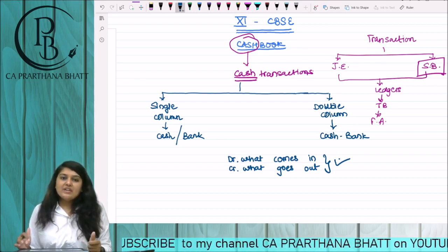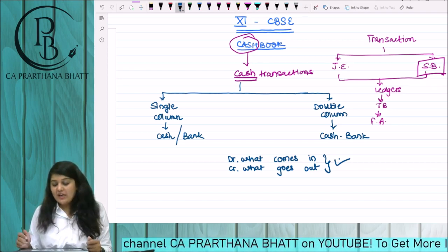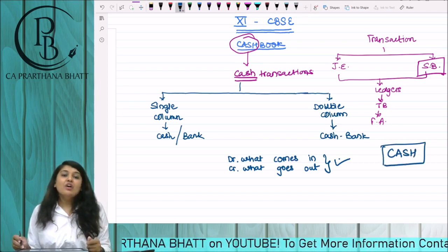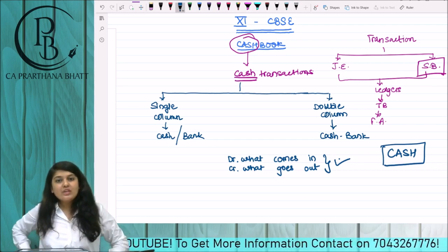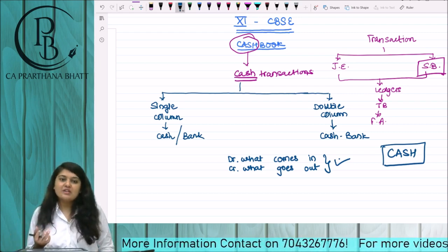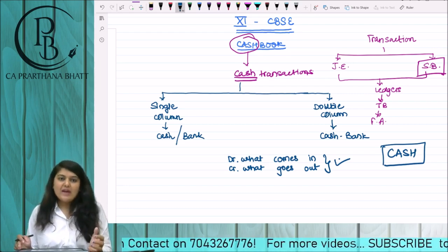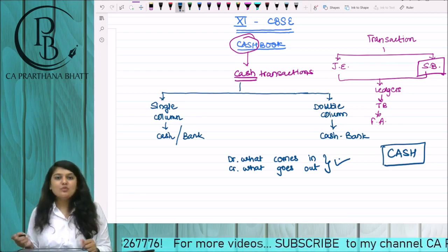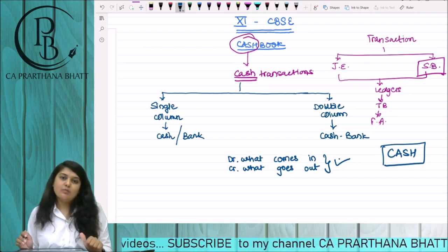One more thing: if I say I have a negative balance in the cash book, that is definitely not possible — I am specifically talking about cash. A cash column can never have a negative balance. Why? If you don't have cash, you cannot spend it. If you don't have money, you cannot spend it. If you have taken money from a friend, then you are supposed to write that down first, and then you spend it. So there has to be a positive balance always in the cash column.